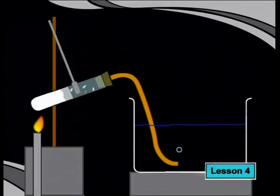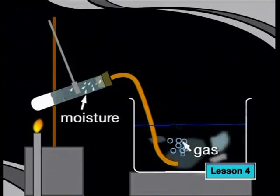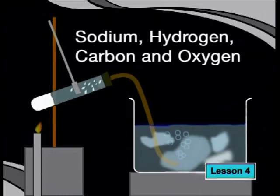Let's begin by investigating the thermal decomposition of sodium bicarbonate. The first thing we need to do is identify the products formed in this reaction. Have a careful look at this animation that shows what happens during the reaction. When sodium bicarbonate is heated over a Bunsen burner, a gas is released and the sides of the test tube become moist. Based on the elements that make up sodium bicarbonate — sodium, hydrogen, carbon and oxygen — chemists predict that the moisture will be water.